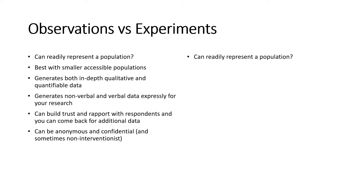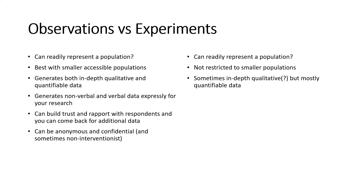Experiments are not well suited for smaller accessible populations, but you can use observations with smaller accessible populations — like homeless people or people who have been sexually exploited. Observations can generate both in-depth qualitative data and sometimes quantifiable data. With experiments, you sometimes get in-depth qualitative data, but most of the time experiments are used to generate quantifiable data for numerical analysis.